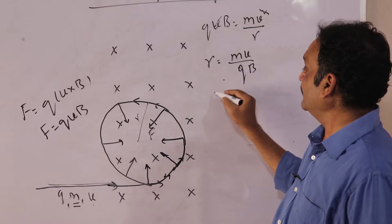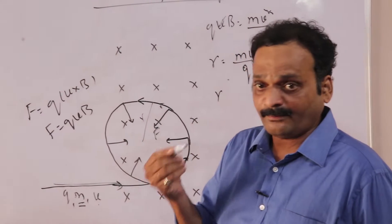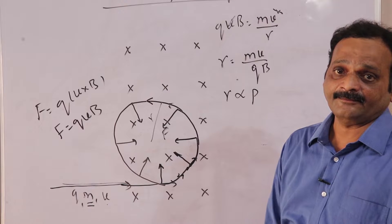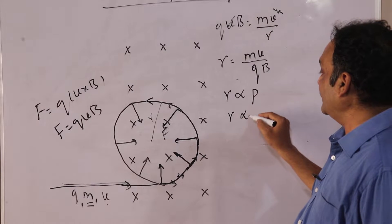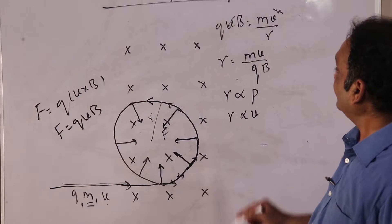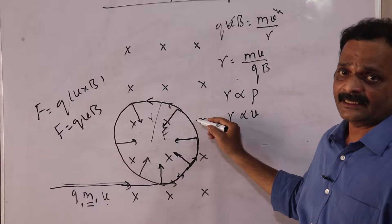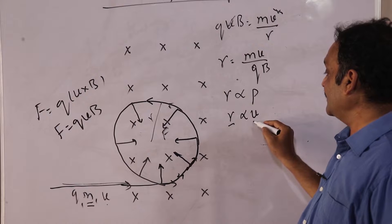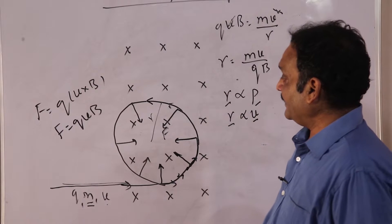The radius of the circular path r = mv/qB. Here, mv is the momentum of the particle. So the radius of the circular path is proportional to the linear momentum of the particle. If we take m, q, and B as constants, then radius is proportional to the velocity of the particle. We can also write that radius is proportional to the momentum of the particle.